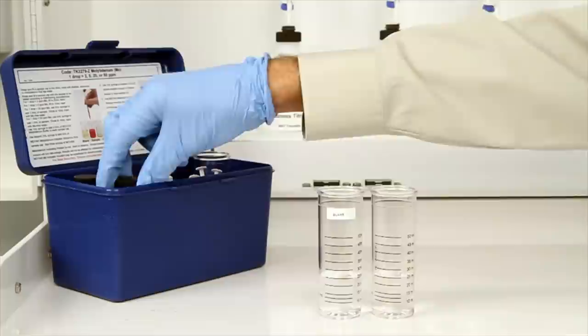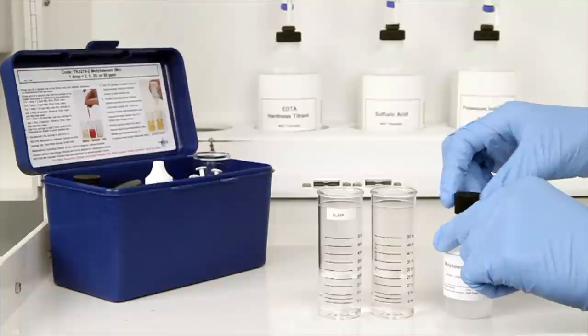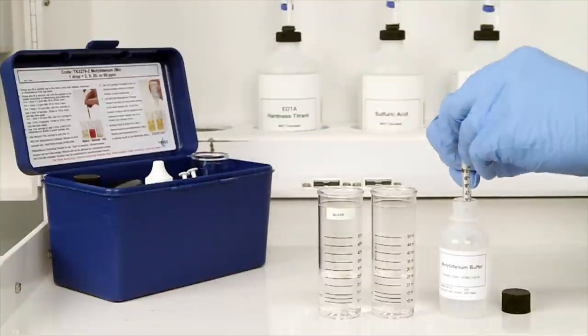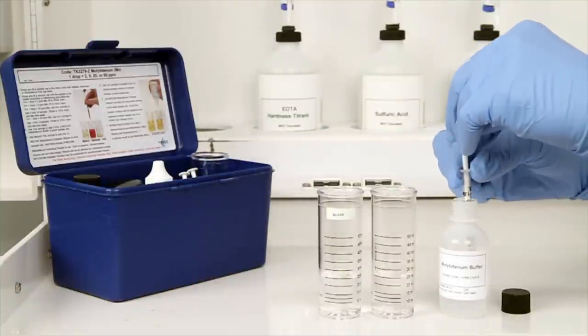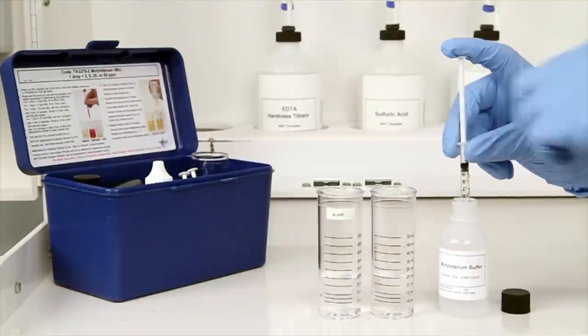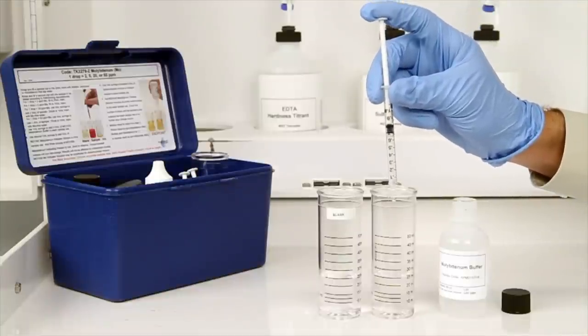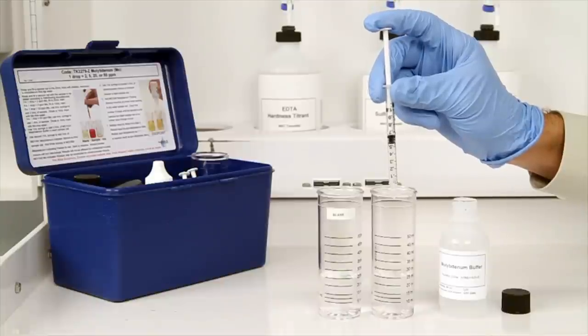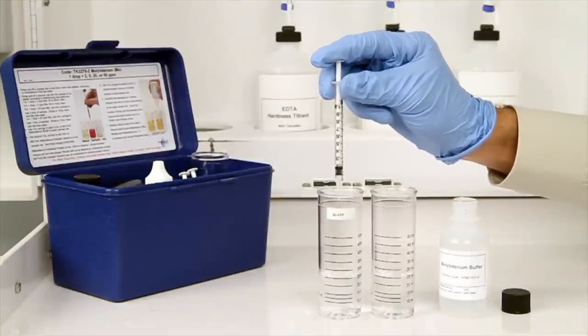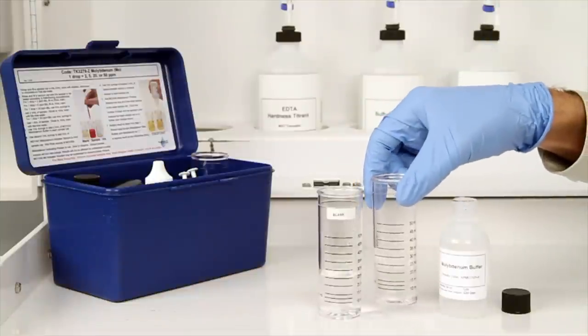The next step according to the endpoint ID procedure is to use a one milliliter syringe to add half a milliliter of molybdenum buffer to each of the sample vials prepared in the previous step. After the addition of the reagent, swirl the vials to mix.